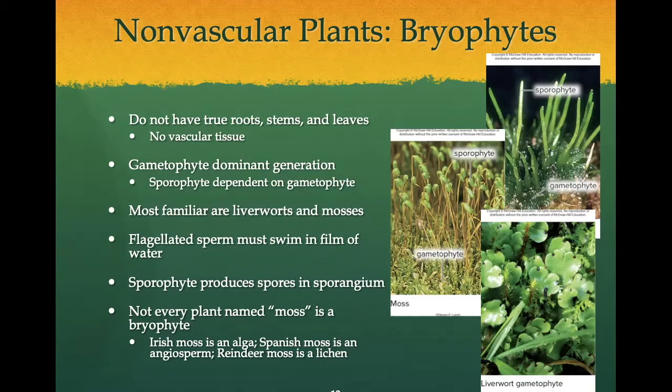Vascular plants have an internal transport system that facilitates the movement of water and nutrients through the body, allowing them to live in drier conditions and increase in height to maximize photosynthesis. Non-vascular plants include the liverworts, hornworts, and mosses — collectively often called the bryophytes. Bryophytes in general do not have true roots, stems, and leaves, which by definition contain well-developed vascular tissue. Also, in bryophytes unlike other plants, the gametophyte is the dominant generation. The gametophyte is the green leafy part, which produces the gametes.